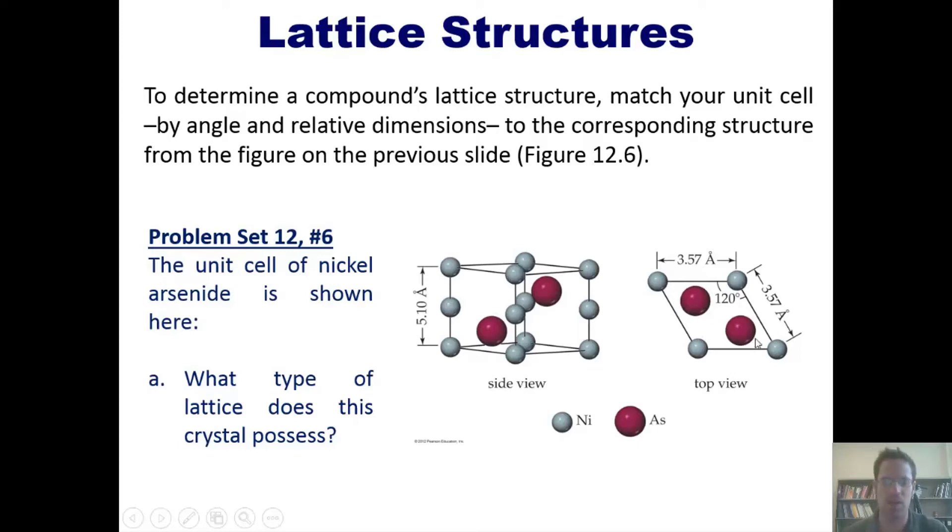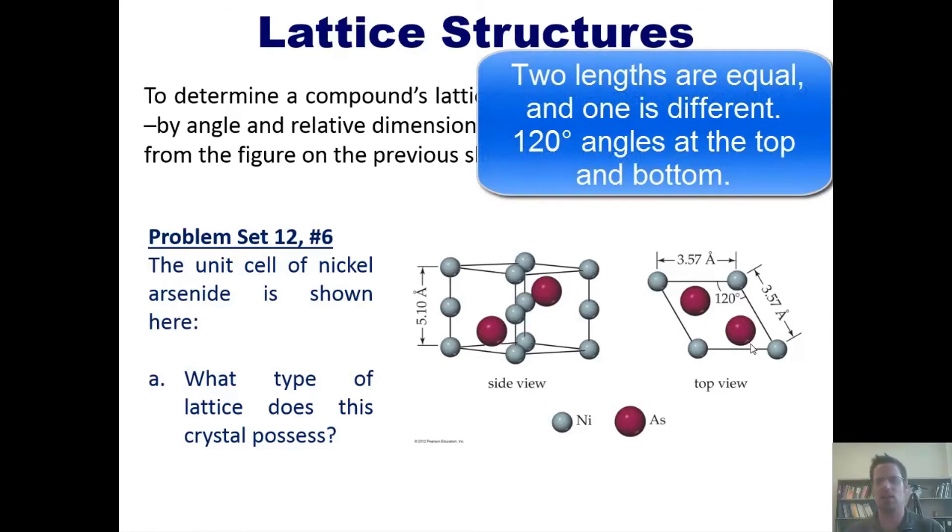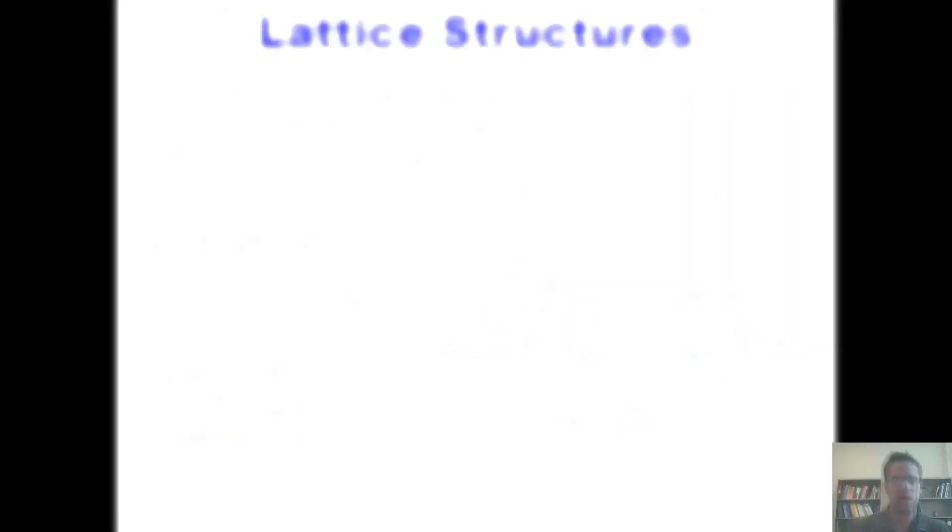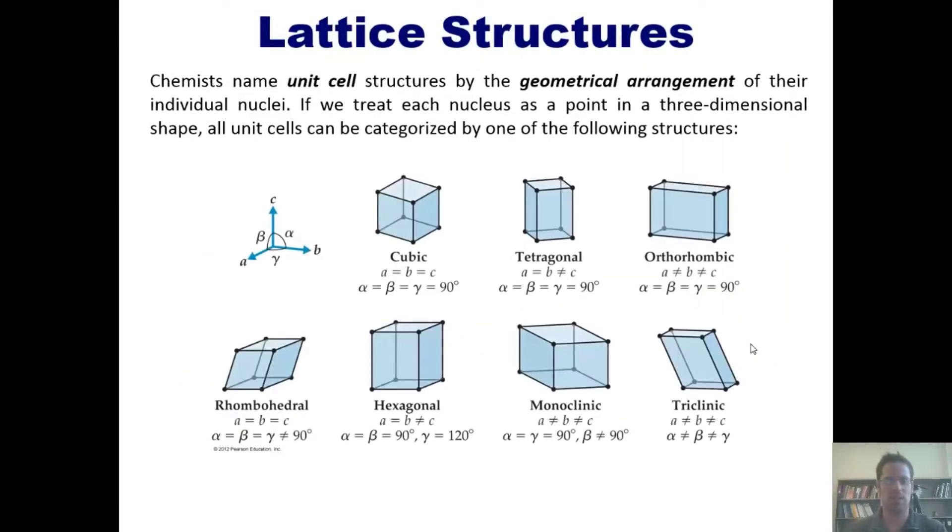So keep that in mind: we've got a unit cell that has two lengths that are identical, one length that's slightly longer, and 120 degree angles in the shape found at the top cap and the bottom base. As we go back then to all of the unit cells that I described in an earlier slide, let's see if we can find the one that matches that description.